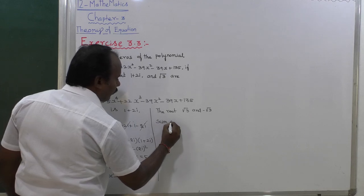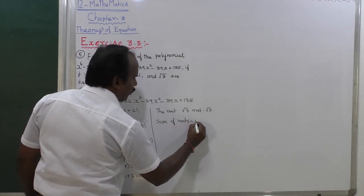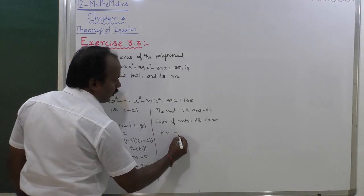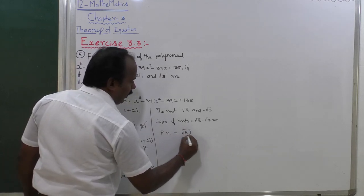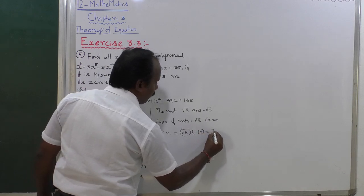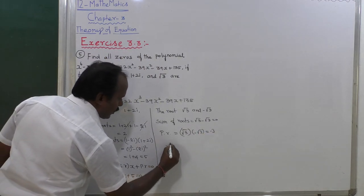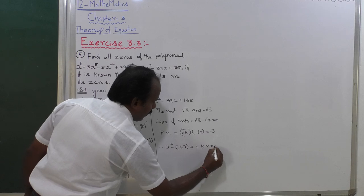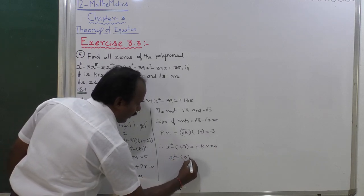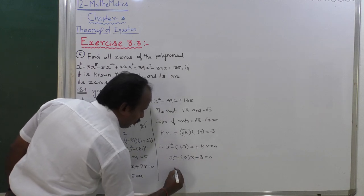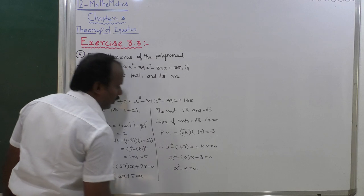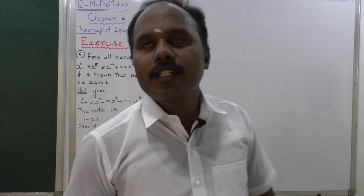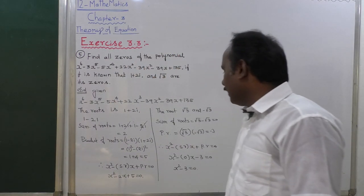Sum of root for the second pair: root 3 minus root 3 equals 0. Product of root: root 3 into minus root 3 equals minus 3. Therefore x square minus 0 into x minus 3 equals 0, which gives x square minus 3 equals 0. So the first equation is x square minus 2x plus 5 equals 0, and the second equation is x square minus 3 equals 0.